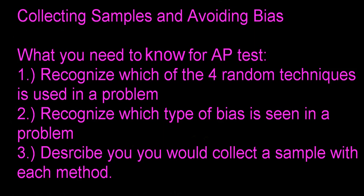So we've got to go through the four different ways to select a sample randomly, you've got to be able to identify them. You have to be able to recognize which type of bias is seen in a problem. So we're going to go over the different biases. And you have to be able to describe how you would collect a sample with each method.